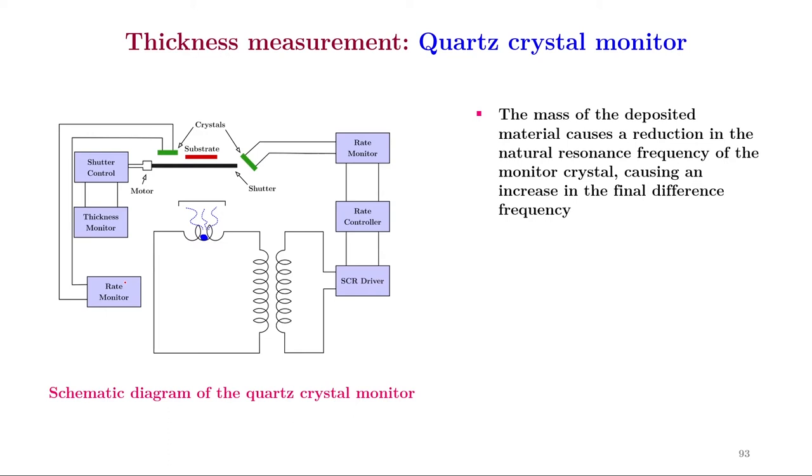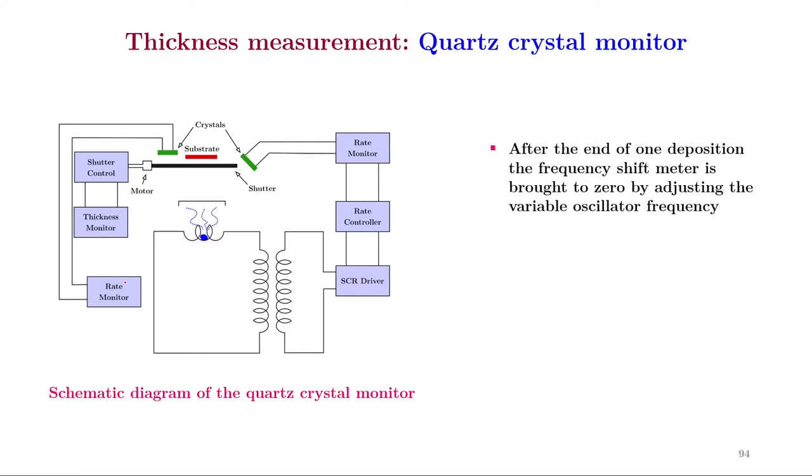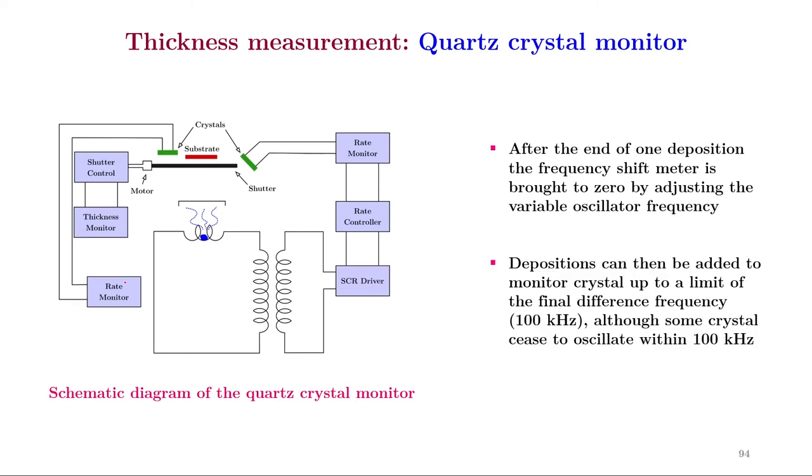The mass of the deposited material causes a reduction in the natural resonance frequency of the monitor crystal causing an increase in the final difference frequency. The change is converted to a DC signal which actuates both the frequency shift meter and the rate meter. Thus, the thickness of the film and its rate of deposition are displayed on the meters. After the end of one deposition, the frequency shift meter is brought to 0 by adjusting the variable oscillator frequency. Depositions can then be added to monitor crystal up to a limit of the final difference frequency that is 100 kilohertz although some crystal ceases to oscillate within 100 kilohertz.